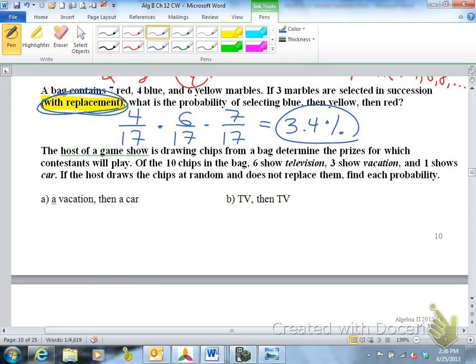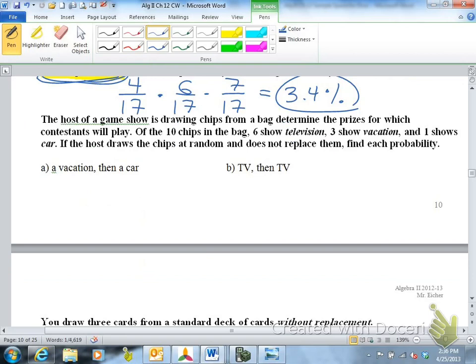3.4%. The next question, the host of a game show is drawing chips from a bag to determine the prizes for which contestants will play. Of the ten chips in the bag, six show television, three show vacation, and one shows car. If the host draws the chips at random and does not replace them, really important that you notice, does not replace them. So if they're not replacing them, these are dependent events. Does not replace. Dependent. So that means our denominators are going to change. You're going to have fewer chips as you move along.